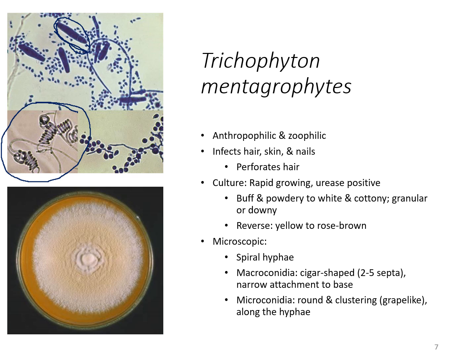Inside those macroconidia there are usually two to five septa. You can see a couple where you can see those little separations — as it gets closer to the end, where the stain is a little darker, they're harder to see, but you may see two to five of those. The microconidia, the smaller ones, tend to be more clustered — several small ones, and in the bottom image they look like grapes on a vine, just scattered along the hyphae.